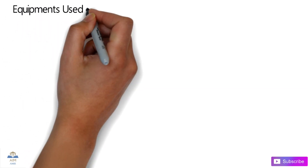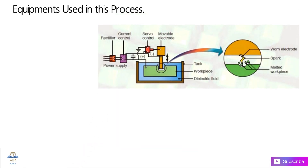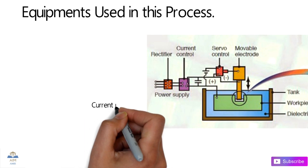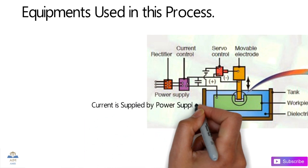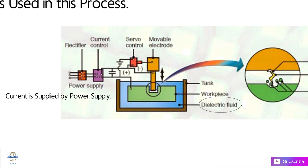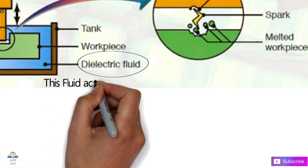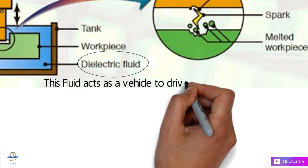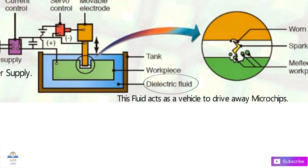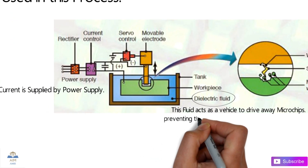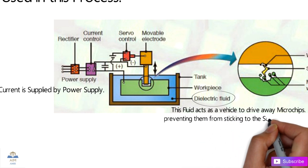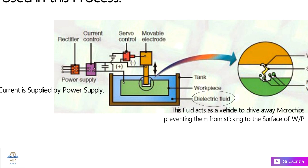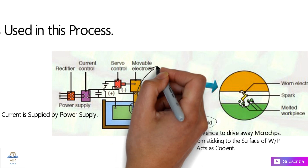Let's look at the equipment used in the EDM process. The first is the power supply — high-frequency current is supplied by the power supply, which is a very important factor. Next is the dielectric fluid, which acts as a vehicle to drive away the microchips formed in the process. This dielectric fluid also prevents those small chips from sticking to the surface of the workpiece, and it also acts as a coolant.